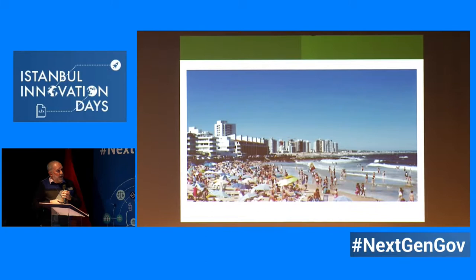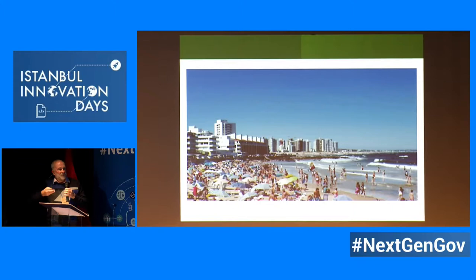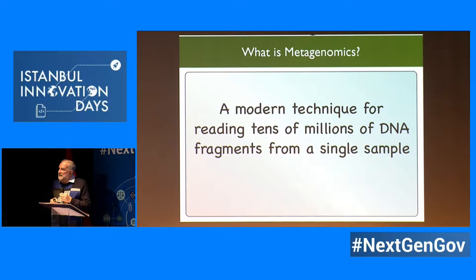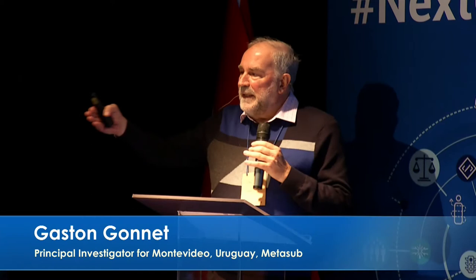Beaches are also a place — depending on the country — where we can collect data from the entire population, because people get in the water and bacteria get washed into it. So what is metagenomics? It's a technique of taking a sample and getting all the DNA that is in that sample in one single experiment, which by now is not very expensive.